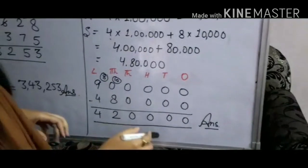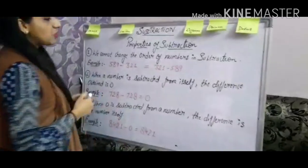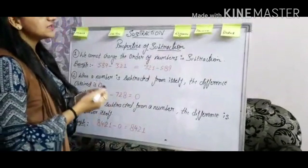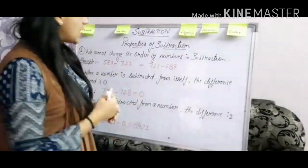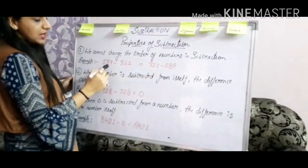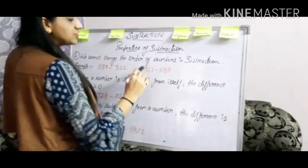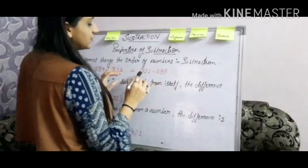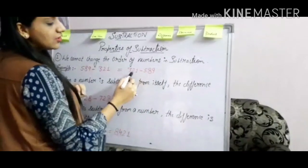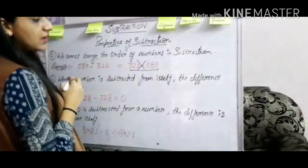Now our next topic is properties of subtraction. The first property says that we cannot change the order of numbers in subtraction, because a smaller number is always subtracted from a larger number. For example, 589 minus 321 is correct since 589 is larger. But if we change the order and write 321 minus 589, that is wrong — we cannot subtract a larger number from a smaller one.